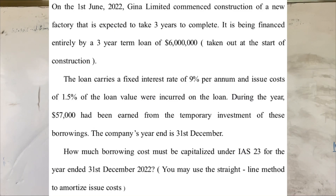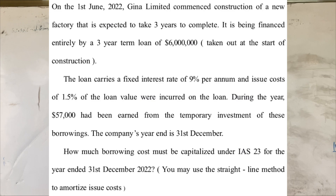On the 1st June 2022, General Limited commences construction of a new factory that is expected to take three years to complete. It has been financed entirely by a three-year term loan of six million dollars taken out at the start of construction. The loan carries a fixed interest rate of 9% per annum. The issuance costs of 1.5% of the loan value were incurred on the loan. During the year, $57,000 had been earned from the temporary investment of these borrowings. The company's year end is 31st December. How much borrowing cost must be capitalized under IAS 23 for the year ended 31st December 2022? You may use the straight-line method to amortize issuance costs.